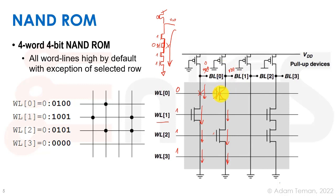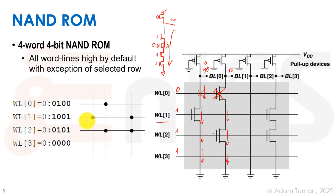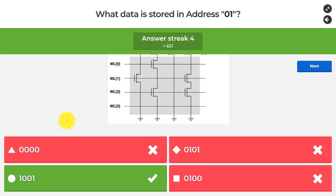So in the NAND ROM, wherever there is a transistor we get a 1 (blocking the pull-down), and wherever there is no transistor we get a 0 — similar to the NOR ROM but without inversion. For word zero: 0, 1, 0, 0. For word line 1 (address 01), we have transistors at positions 1 and 4, giving us 1, 0, 0, 1.